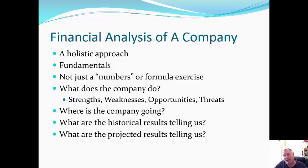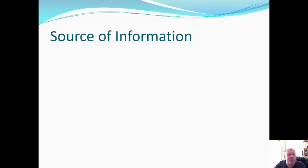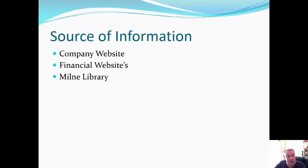What are the projected results telling us? Is there going to be more value or less value? Now, where do you get information? The company website is the first place. Financial websites. The library has a lot of information on strengths, weaknesses, opportunities, and threats. On the company's website, we can find financial data in the form of regulatory reports: the 10-K, the 10-Q, S-1, the proxy. They also have investor presentations, which I really want you to take a look at as we move forward.